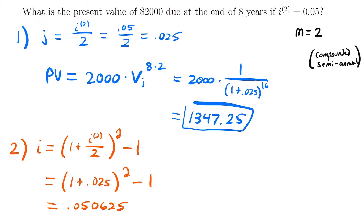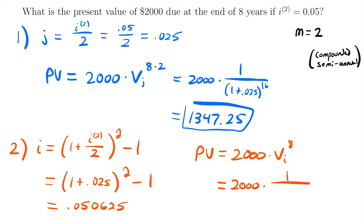Now we can find the present value using the annual effective rate. PV = $2,000 times the present value factor with the annual effective rate over 8 years. We don't have to adjust the time period this time because we have an annual effective rate and 8 is already measured in years. So PV = 2000 × (1 / (1 + 0.050625)^8) = $1,347.25 — the exact same result.